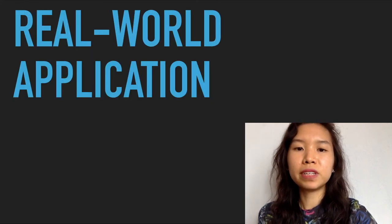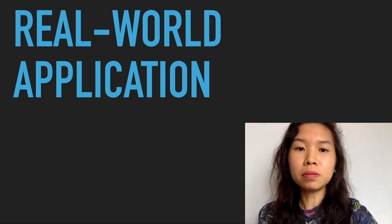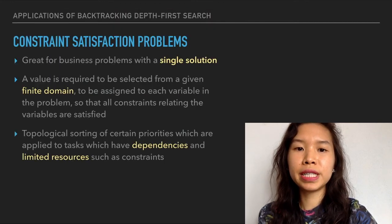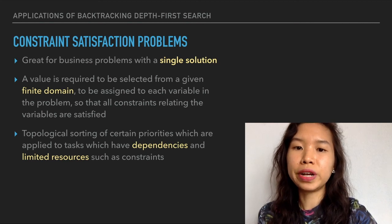Backtracking depth-first search is a great way to solve business problems that have a single solution. These problems are called constraint satisfaction problems, where a value is required to be selected from a given finite domain to be assigned to each variable in the problem, so that all constraints relating the variables are satisfied.